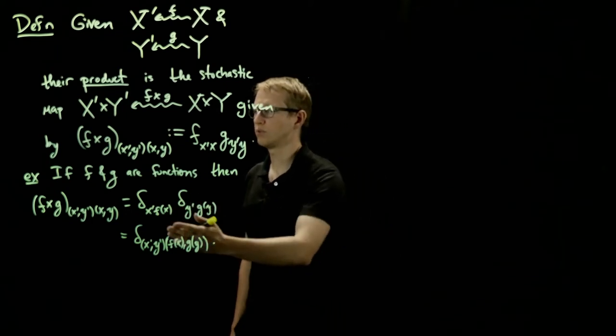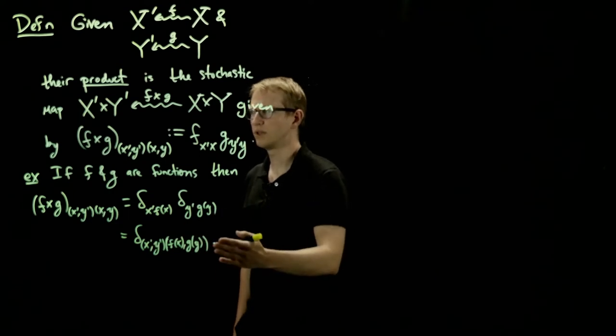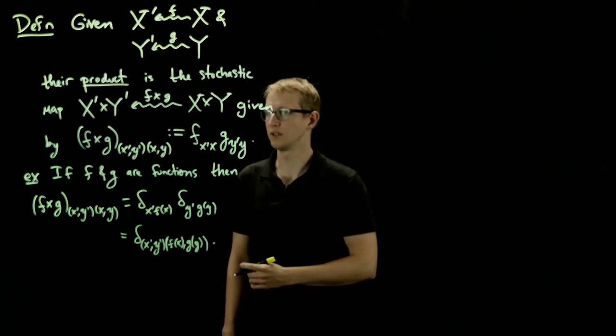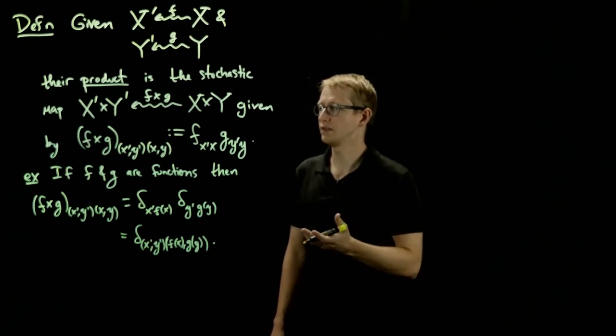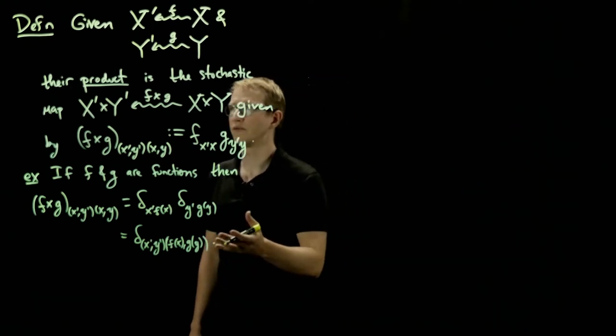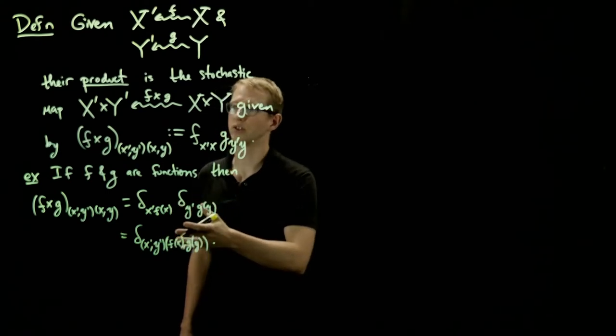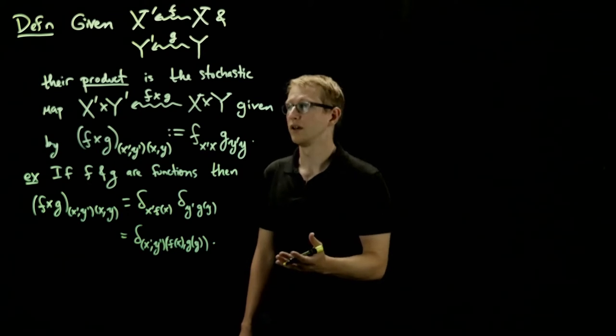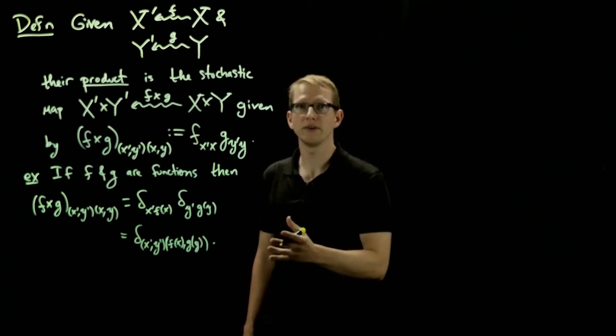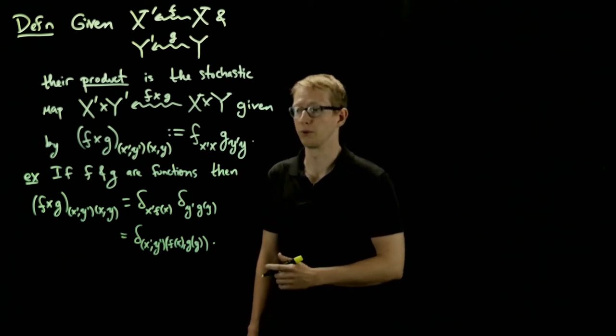And this Cartesian product also satisfies a type of associativity condition. And together, all of these data give the collection of finite sets with stochastic maps and this associated product. It gives it the structure of a symmetric monoidal category.